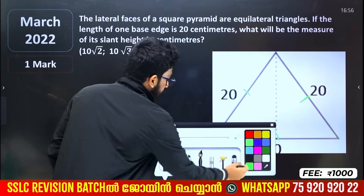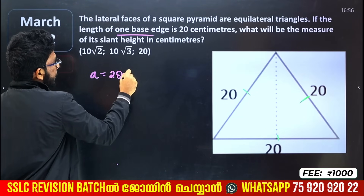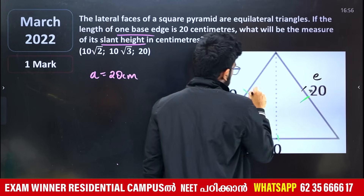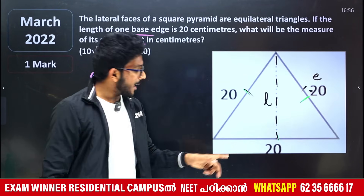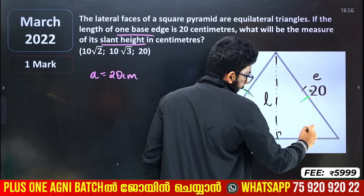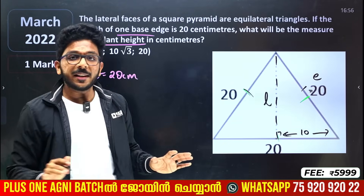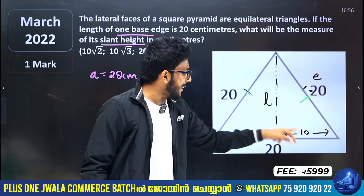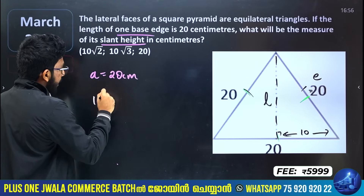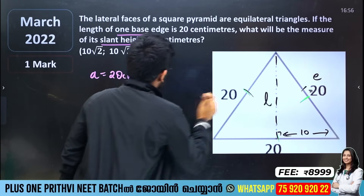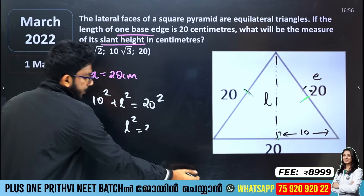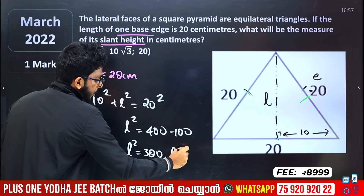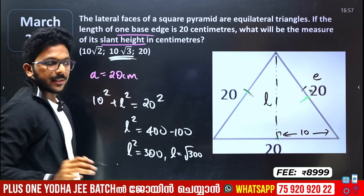If the length of one base edge, then the base edge would be A. A would be 20 cm. And what will be the measure of slant height? What is slant height? This is E — slant height is E. The base edge is 20 cm, so half is 10 cm. Using 10² + L² = E², that gives L² = 300, so L = 10√3.